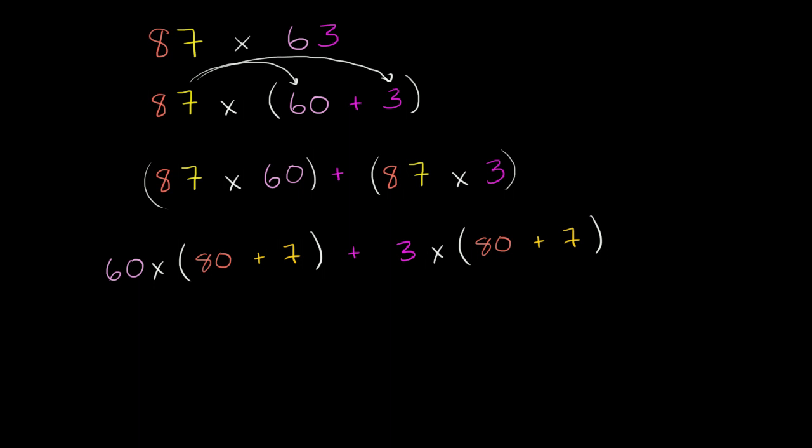So all I did, just to be clear, all of what you see right over here, 87 times 60, well, that's the same thing as 60 times 80 plus 7. All that you see here, 87 times 3, that's the same thing as 3 times 80 plus 7. But look, we can distribute again.